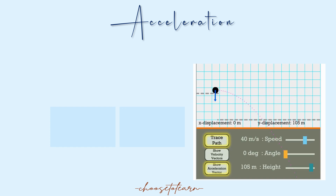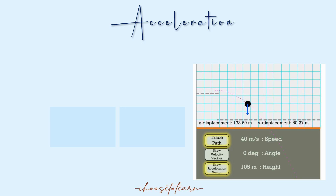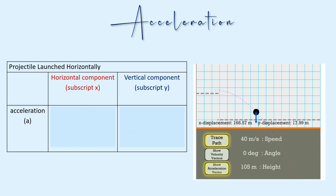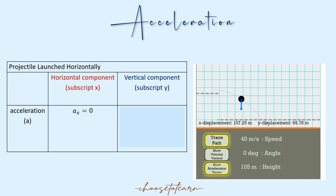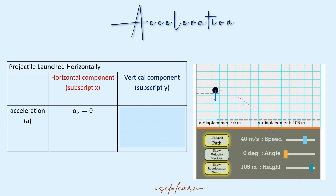Let's now go to acceleration. The blue arrow indicates the acceleration of the projectile. For the horizontal component — subscript X — there is no acceleration. Since projectile motion is influenced only by gravity, the horizontal acceleration equals zero.